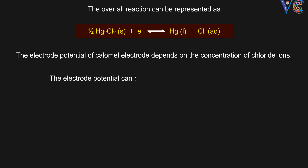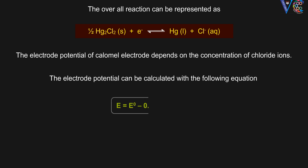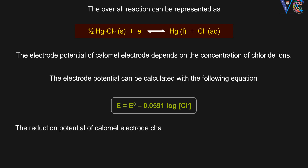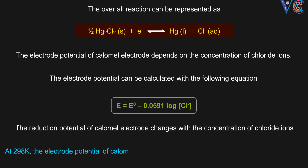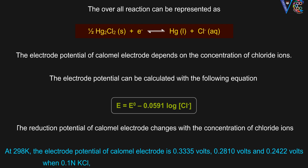The electrode potential of the calomel electrode depends on the concentration of chloride ions, and can be calculated using the Nernst equation. The reduction potential of the calomel electrode changes with the concentration of chloride ions. At 298 K, the electrode potential of the calomel electrode is 0.3335 volts, or 0.2810 volts, or 0.2422 volts, when 0.1 N KCl, or 1 N KCl, or saturated KCl solution are used respectively.